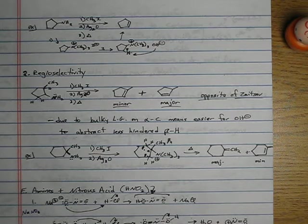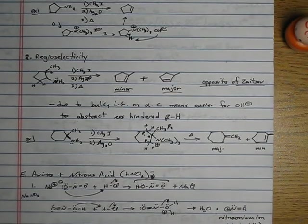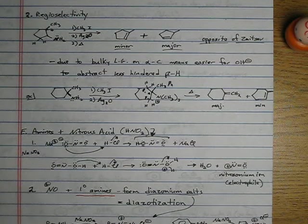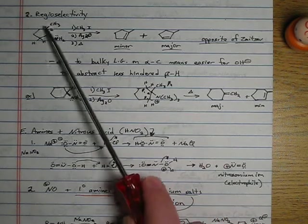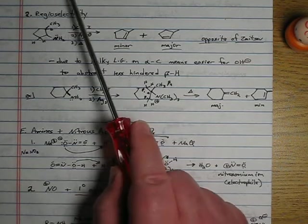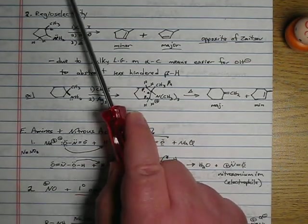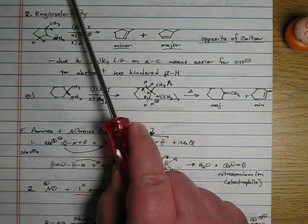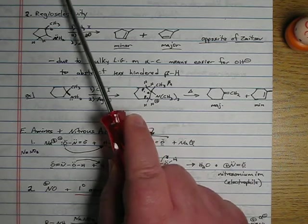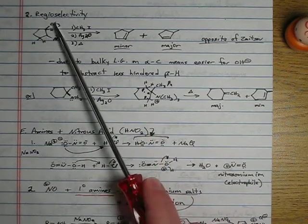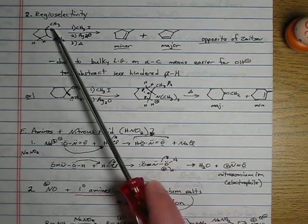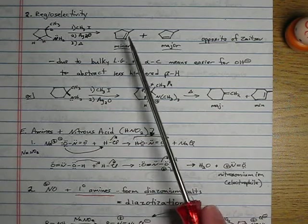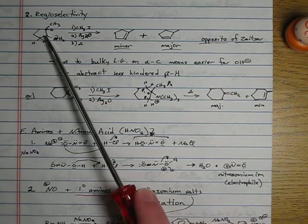Now the interesting thing about the Hofmann elimination is its regioselectivity. What Hofmann found is if we had this molecule here, it's looking a little busy here, but it's essentially the same molecule we had up here, but let's put a methyl group right there. So take a cyclopentane ring with an amine on it, and alpha to that carbon that contains the amine, let's put a methyl group right there.